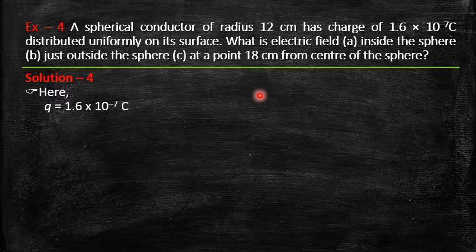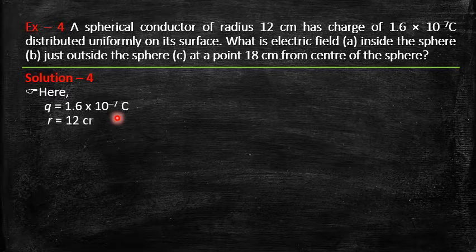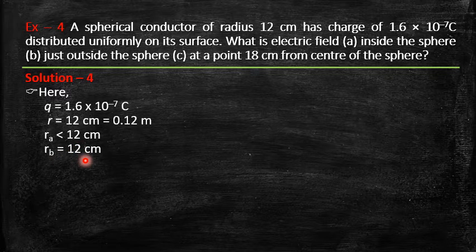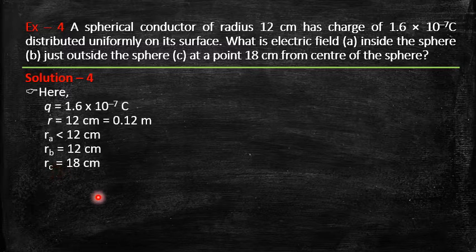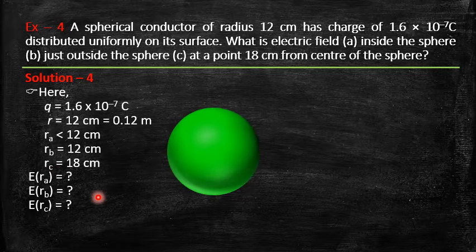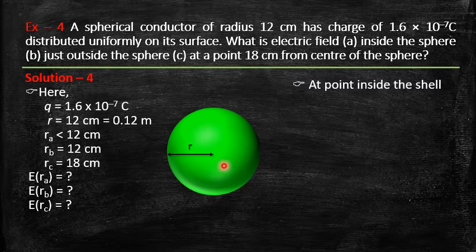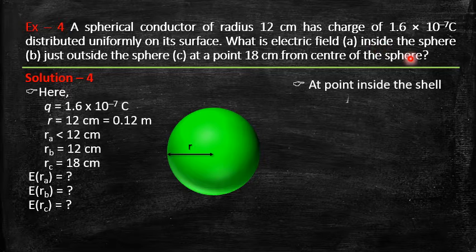The sphere has charge 1.6×10⁻⁷ C uniformly distributed on it, with radius 0.12 m. We need the electric field at: (a) a point inside (distance < 12 cm), (b) just outside the surface at 12 cm, and (c) at r_C = 18 cm. For a point inside a spherical shell with charge only on the surface, there is no enclosed charge, so the electric field inside is zero.